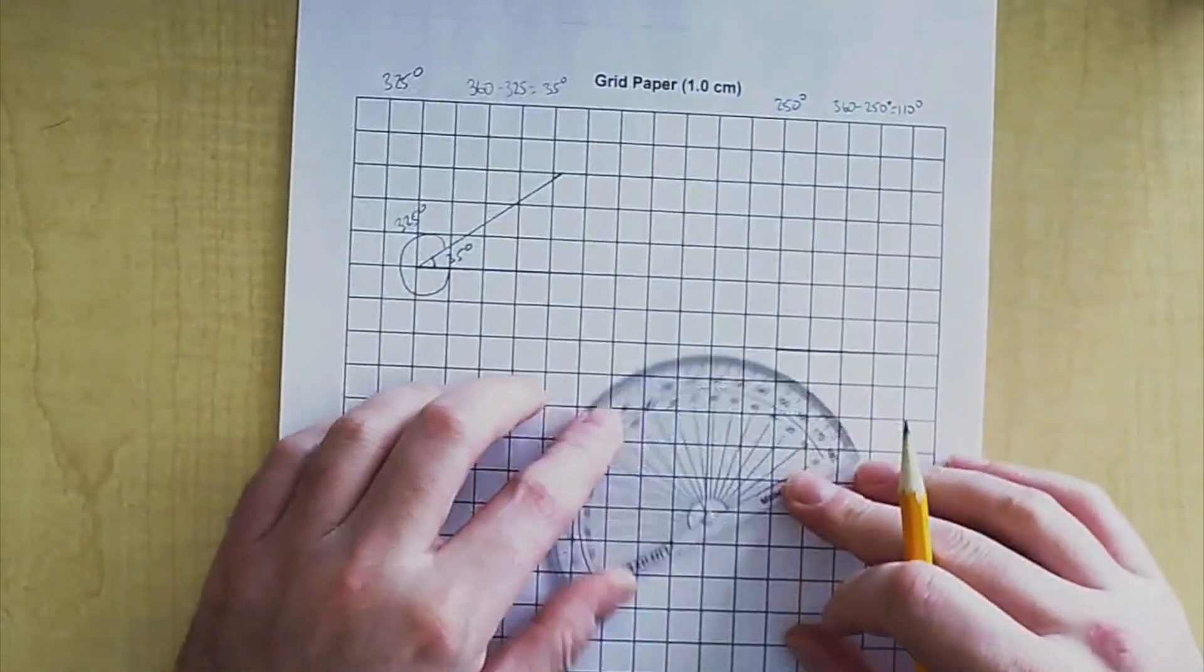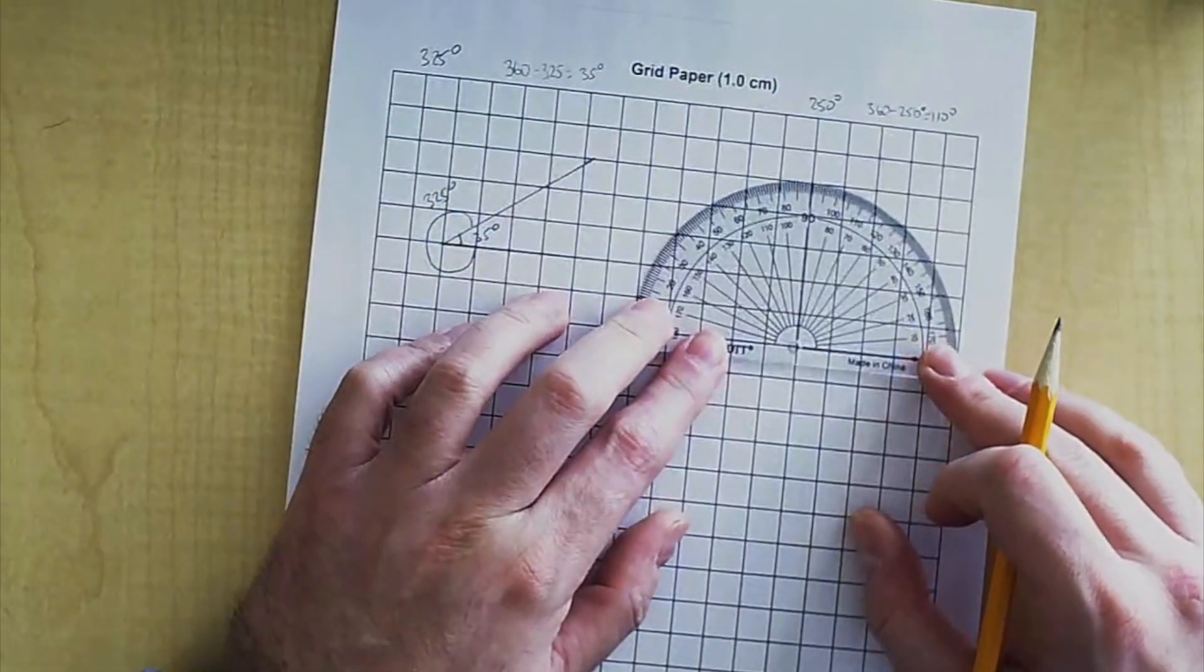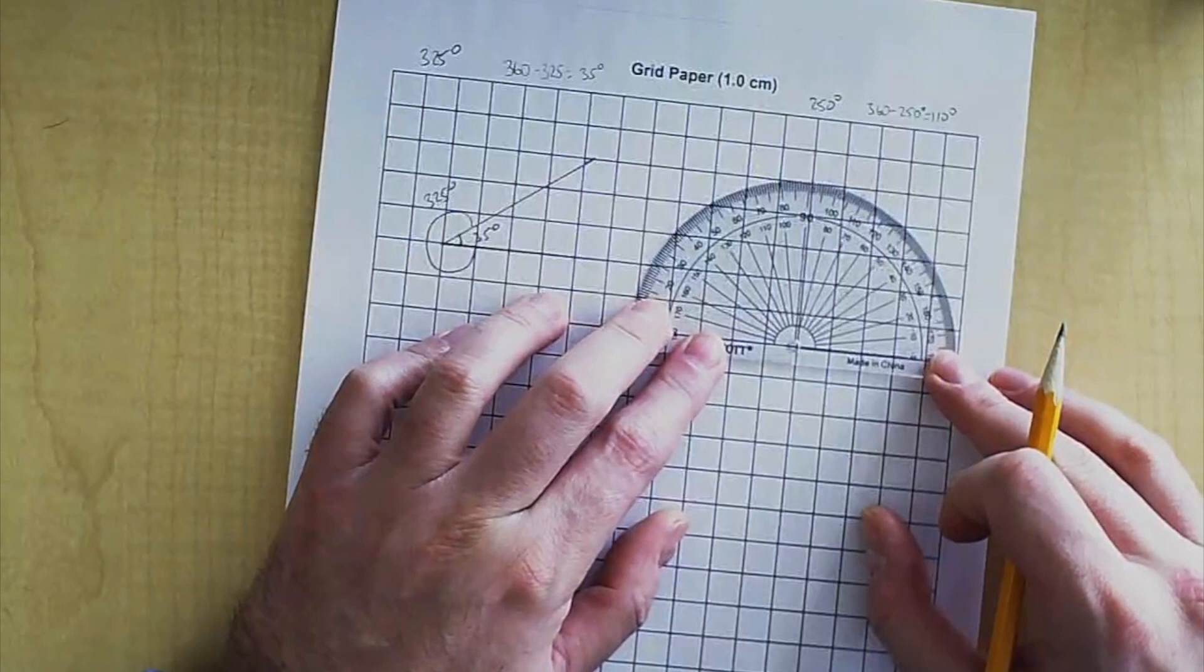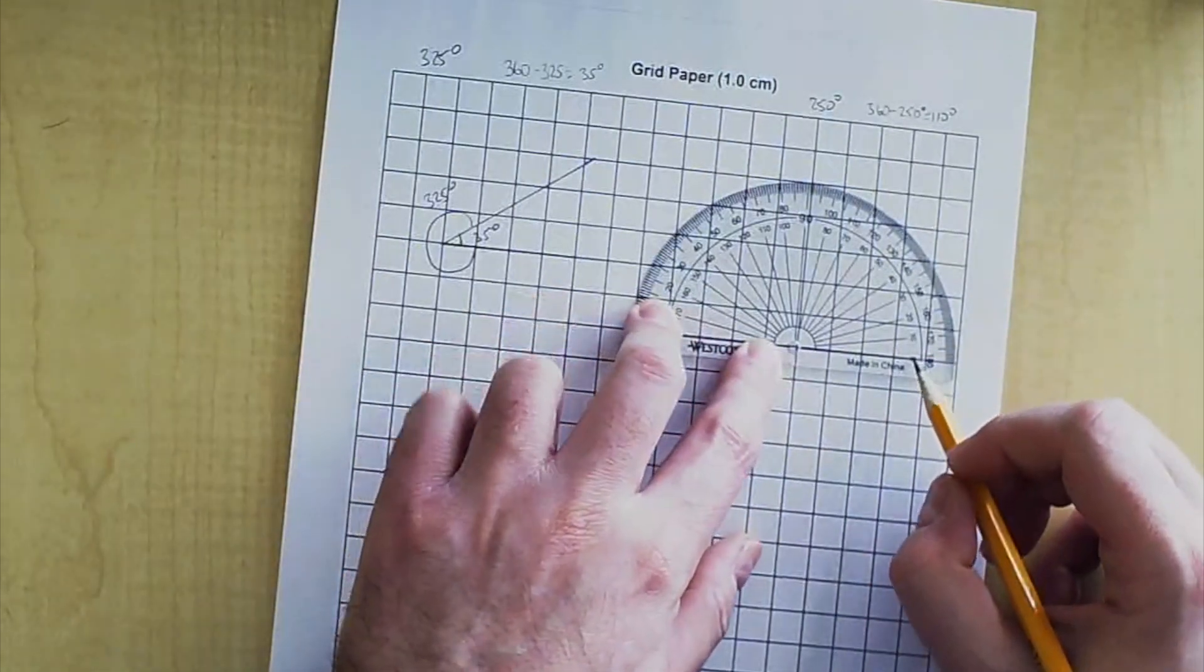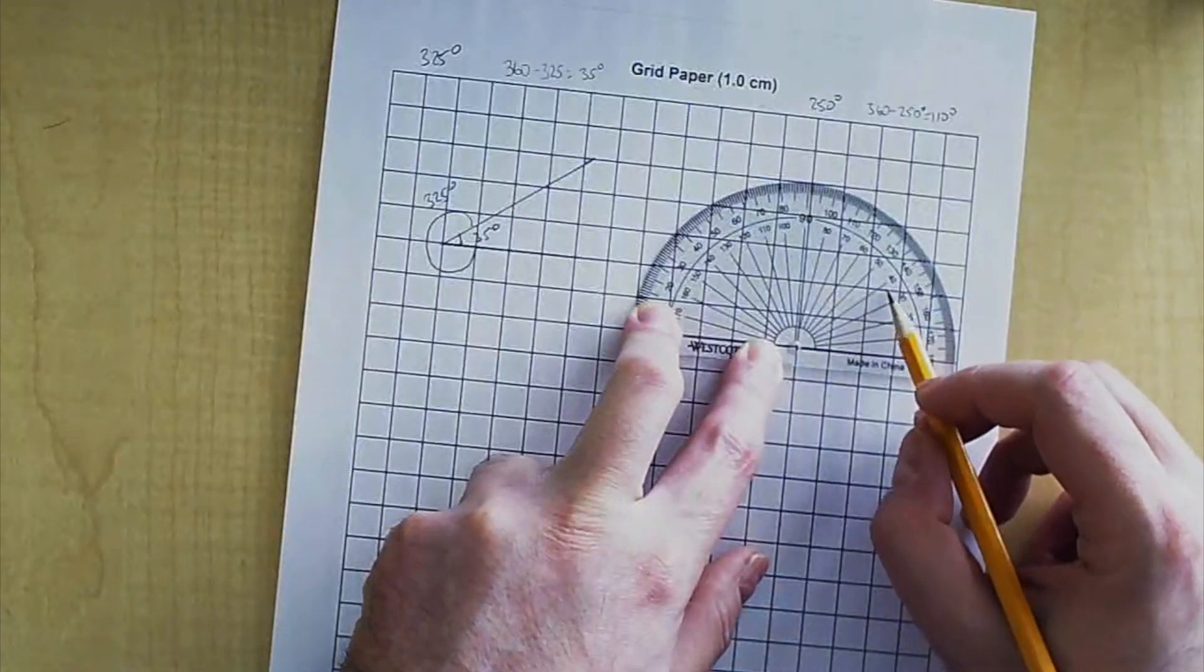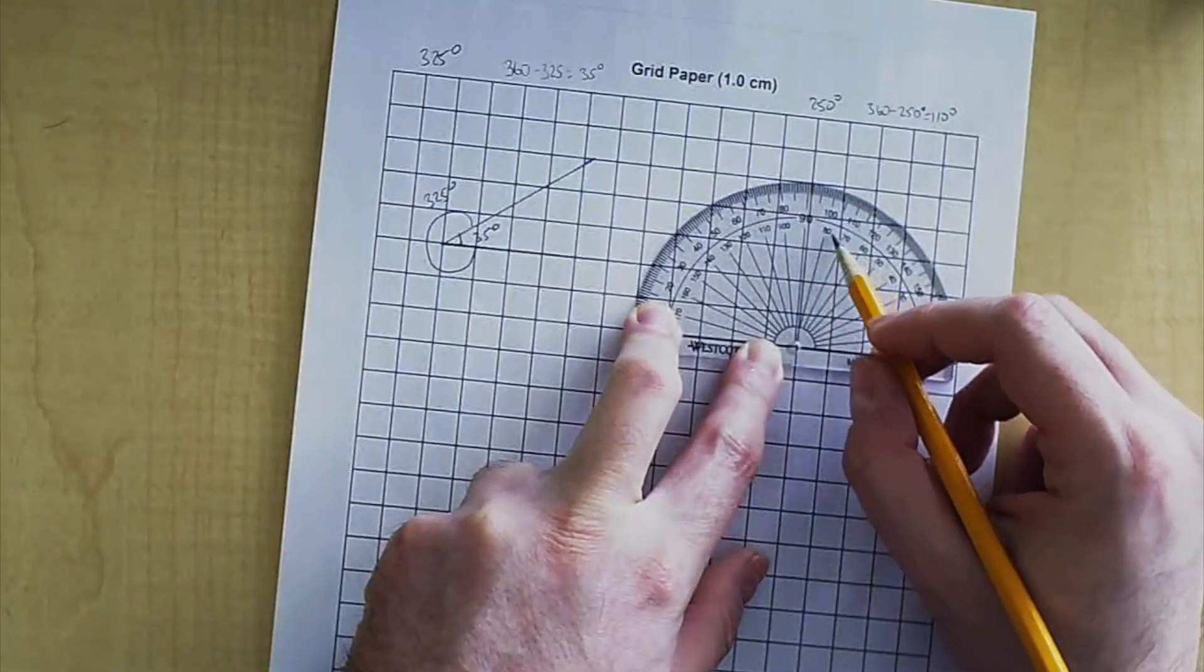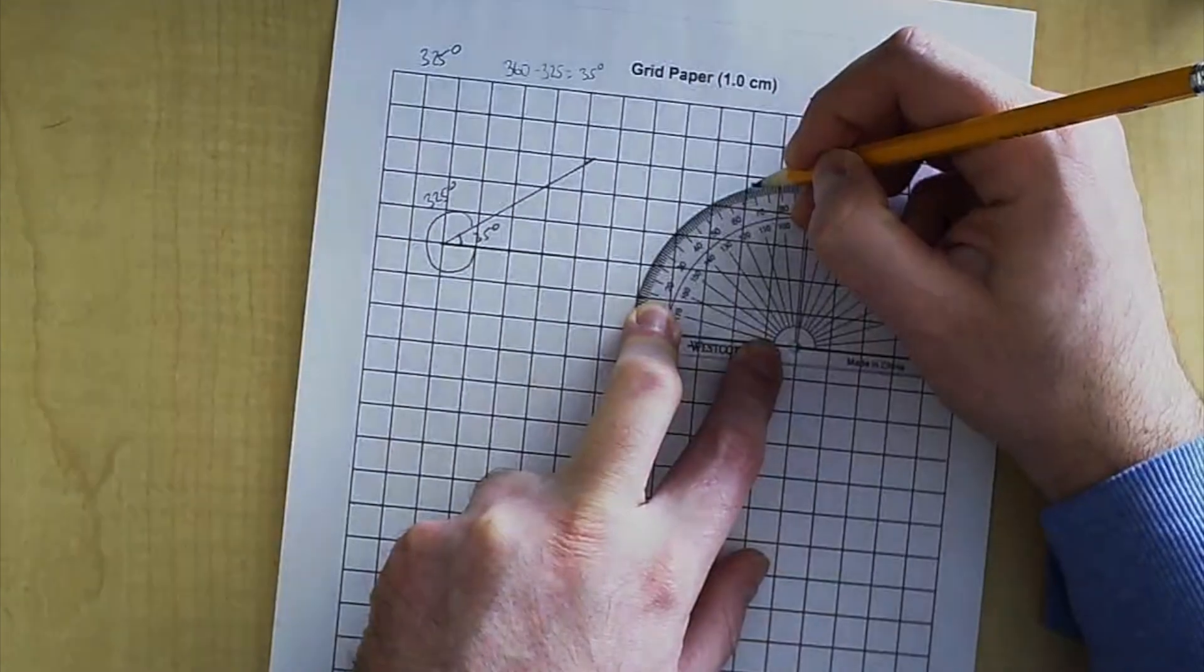Now you're going to measure 110 degrees. Line up the line on zero. Since we're starting on the right, we're going to use the inside numbers.